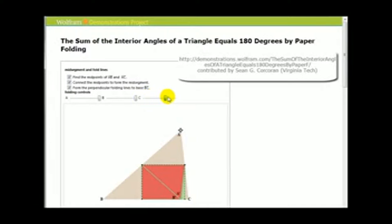And what we can see is that angles A, B, and C form a straight angle which has a measure of 180 degrees.